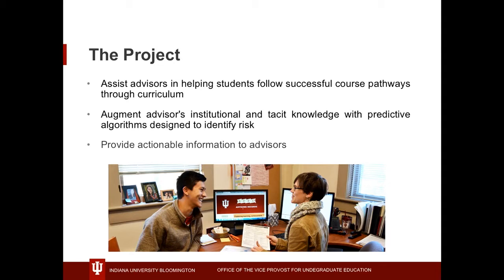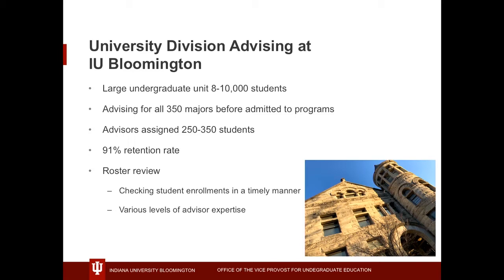To give you a little background on the users: at Indiana University Bloomington, we work in University Division, which is our large undergraduate unit. We typically have 8,000 to 10,000 students. These students haven't yet been accepted into the major for their program, so they are still exploring majors. There are 350 different majors, and advisors are assigned 250 to 300 students — fairly large rosters.